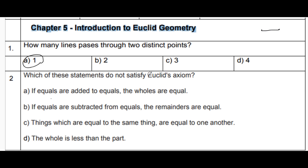Which of these statements does not satisfy Euclid's axiom? If equals are added to equals, the wholes are equal. If equals are subtracted from equals, the remainders are equal. Things which are equal to the same thing are equal to one another — these three all look correct. But 'the whole is less than the part' — no, the whole is always greater than the part. So this statement is false.